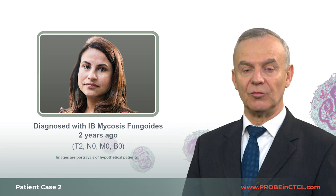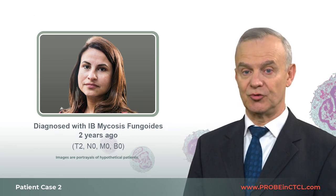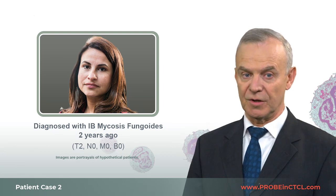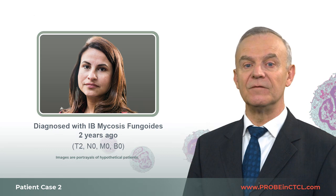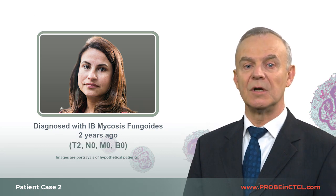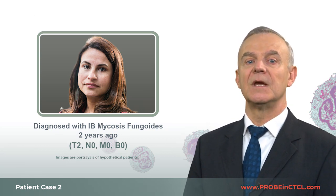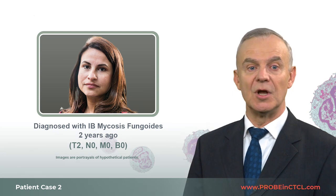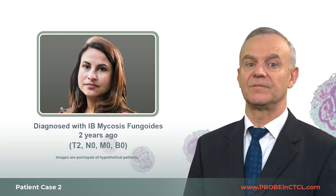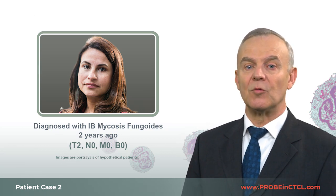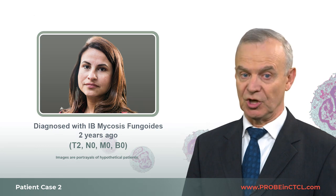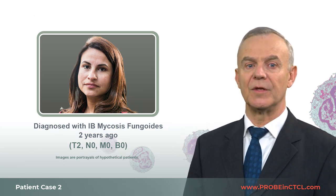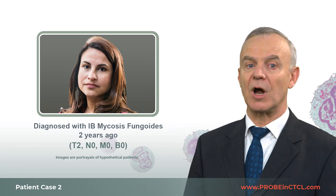Patient two is a 40-year-old woman. She was initially diagnosed two years ago with stage 1B mycosis fungoides. Skin was the only involved compartment, classified as T2 involving approximately 12% of body skin surface. She had no lymphadenopathy, and flow cytometry utilizing a T-cell panel showed no evidence of blood involvement at diagnosis. Furthermore, there was no evidence of extracutaneous involvement by imaging. Patient two was treated with phototherapy and bexarotene.